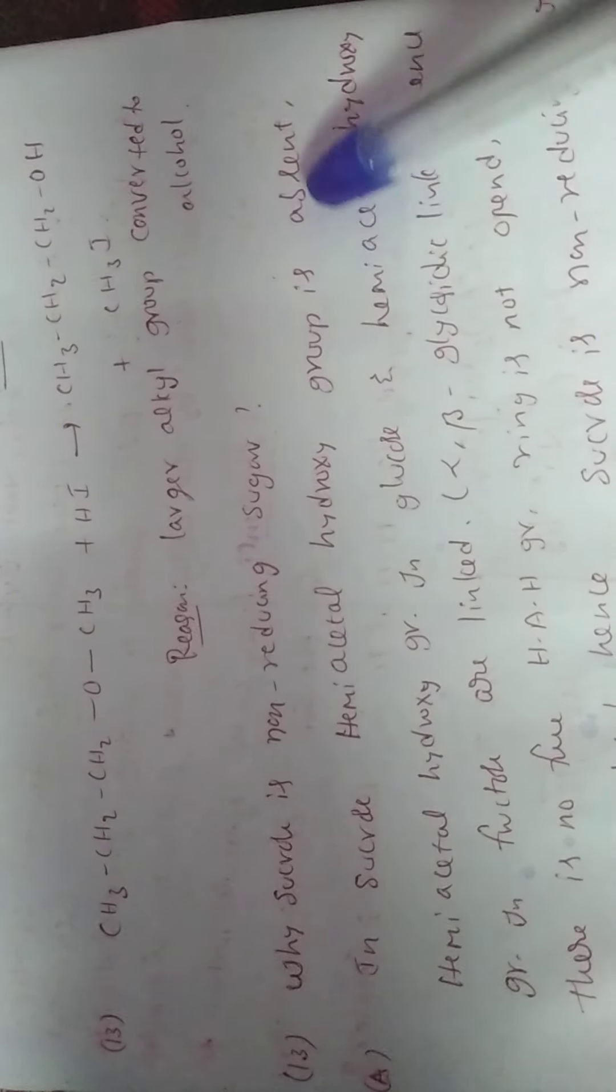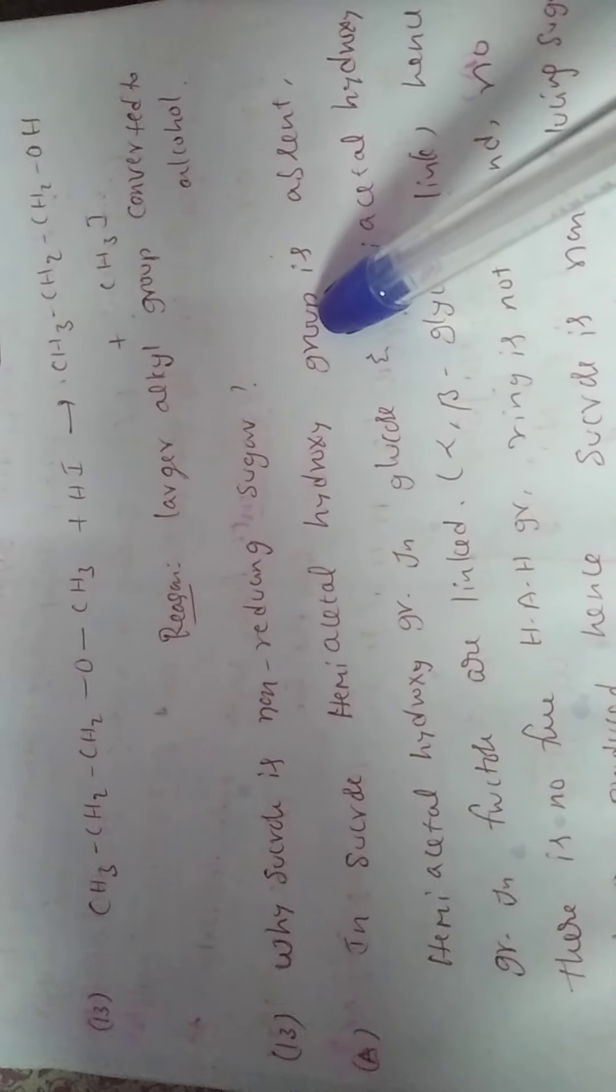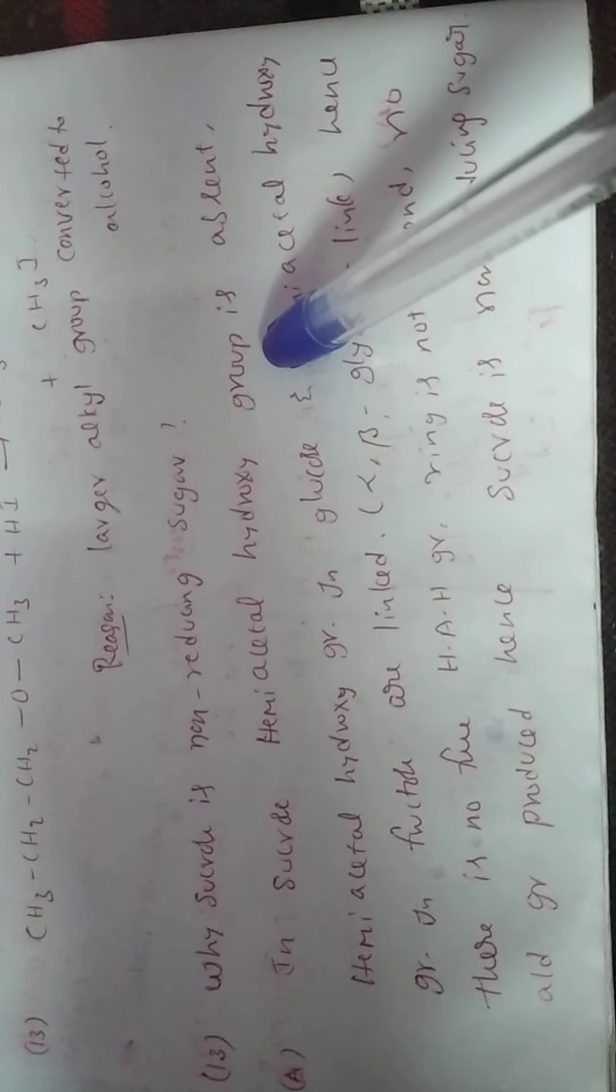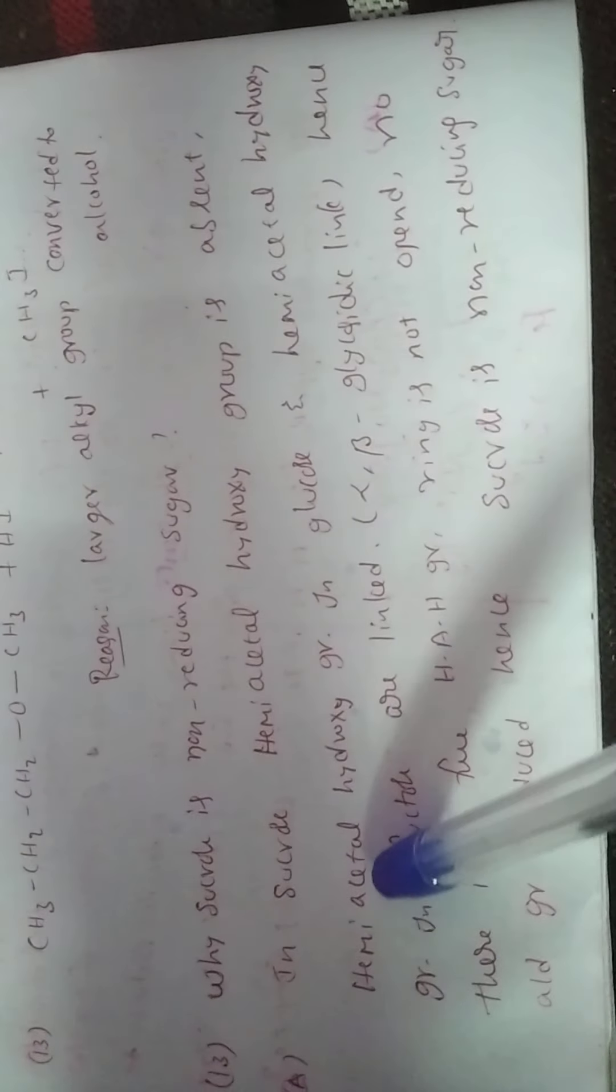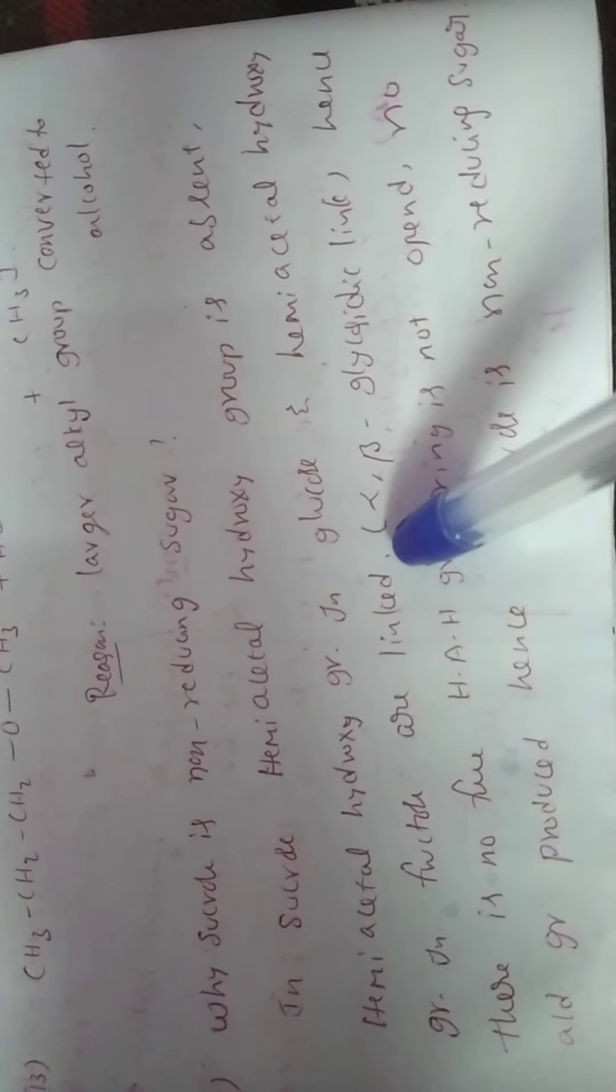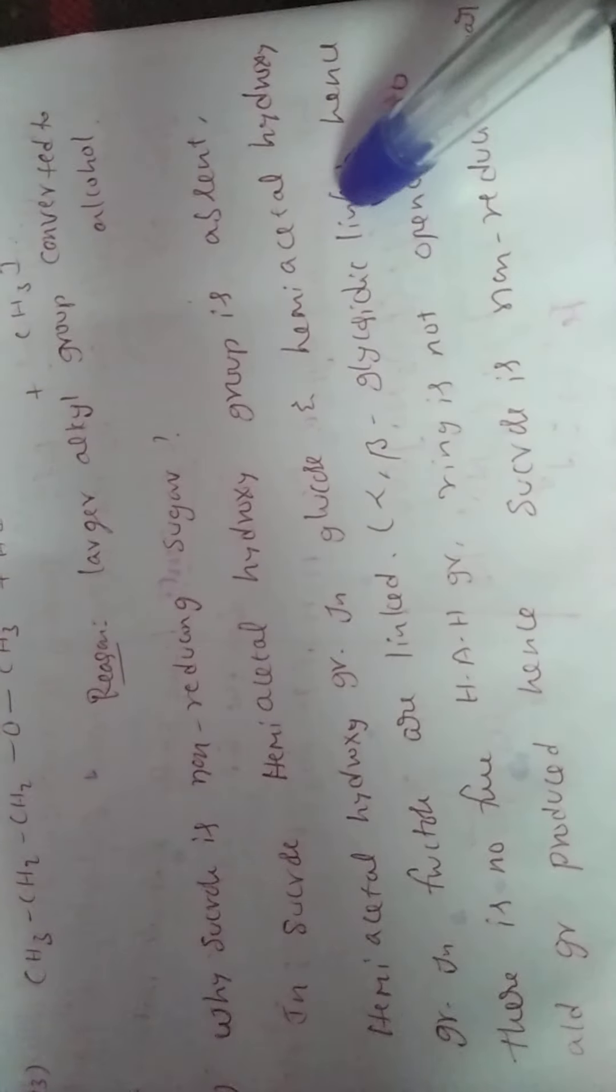Why sucrose is non-reducing sugar? In sucrose, hemiacetal hydroxy group is absent. Hemiacetal hydroxy group, OH group which is attached to anomeric carbon. Anomeric carbon is carbon which is involved in the cyclic structure. Hemiacetal hydroxy group in glucose and fructose have alpha-beta glycosidic linkage present. Hence there is no free hemiacetal hydroxy group. Ring is not open.